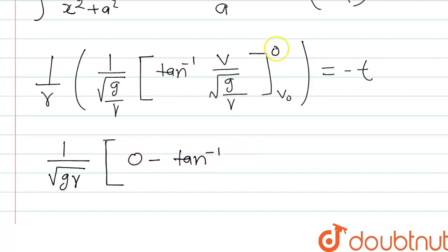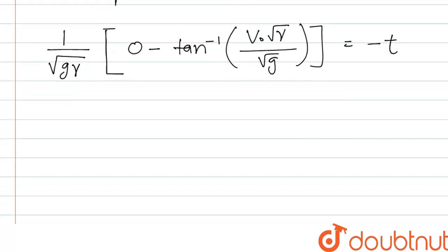This is the zero here because the velocity is zero finally. Now tan inverse v naught, the initial velocity, into gamma by root g. Equal to minus t. And if we remove the minus from both sides, we can write t equal to